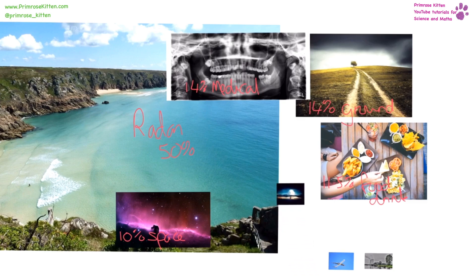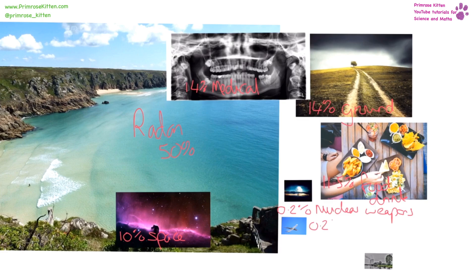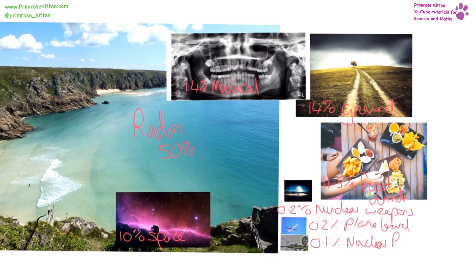From the testing of nuclear weapons, it is going to be about 0.2%. From plane travel — and this obviously varies between people, because the more you travel on a plane, the more radiation you are going to be exposed to. And then the last one: we are all going to get a tiny dose from nuclear power stations. And those are your sources of background radiation.